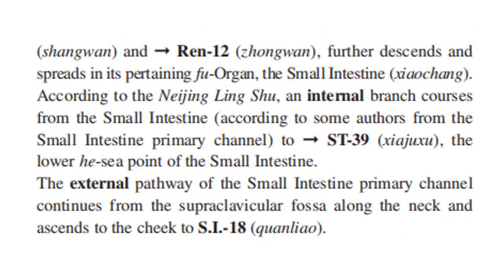According to the Neijing Lingshu, an internal branch arises from the small intestine — according to some authors, from the small intestine primary channel — to Stomach 39, the lower he-sea point of the small intestine.